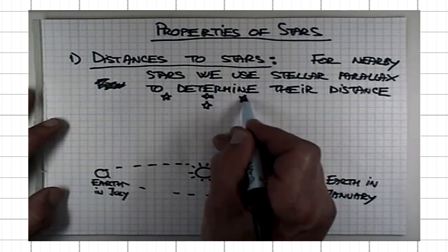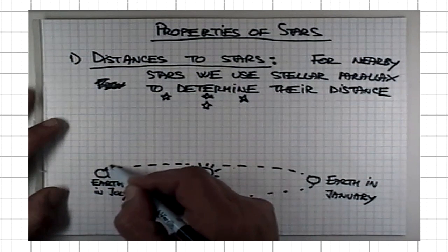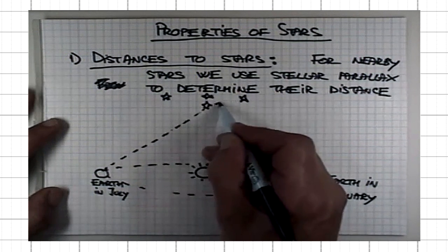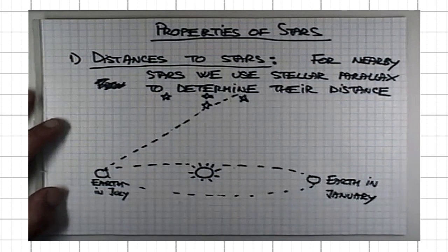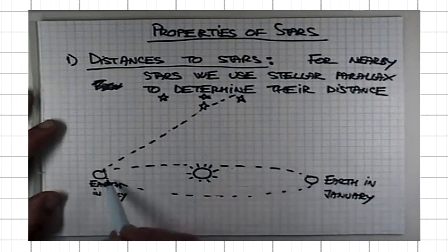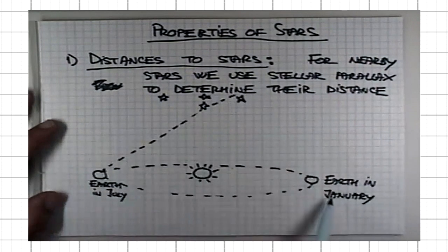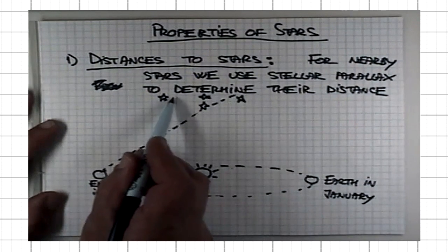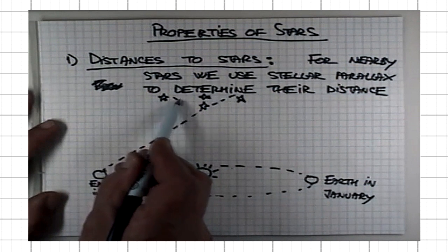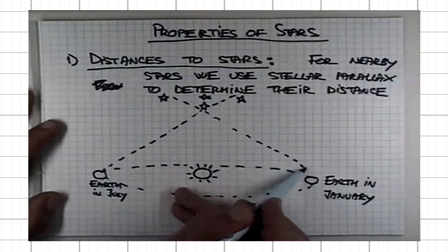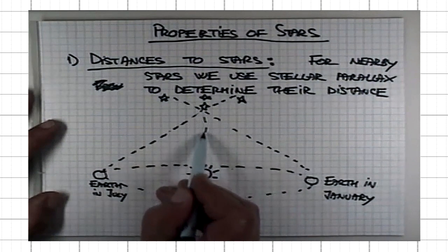If you observe a star against the background of more distant stars, it looks as if the star has moved relative to the background stars. In July, it looks to be closer to this one here on the right. In January, it appears to be closer to the one on the left. This is what we call parallax.